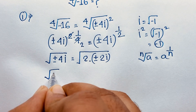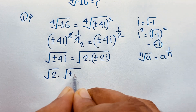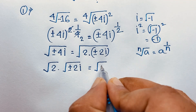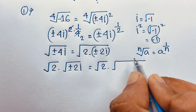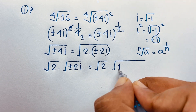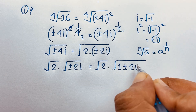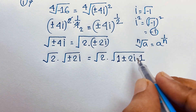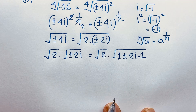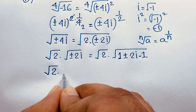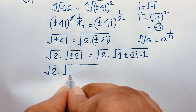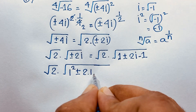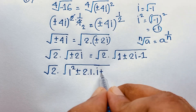Now I apply the math formula here. It will be square root 2 times square root of plus or minus 2i. So I take 1 here — this is plus or minus 2i. I add this 1, and again I subtract this 1. So 1 minus 1 equals 0, and we find again plus or minus 2i. This is square root 2 times square root: 1 squared, plus or minus 2 times 1 times i, plus i squared.